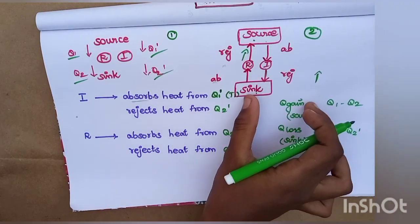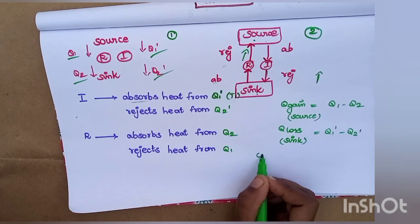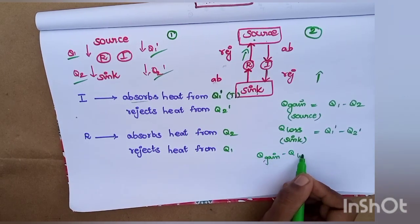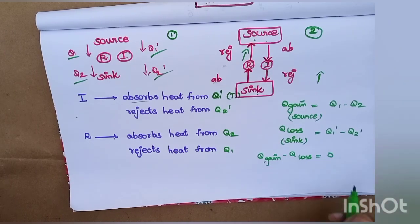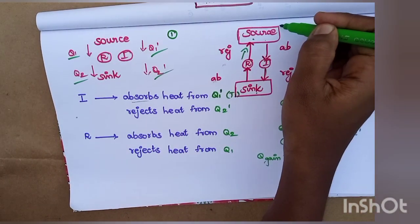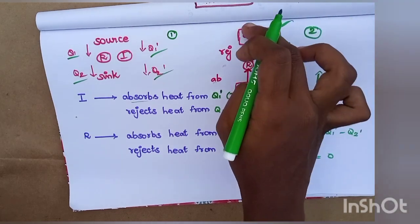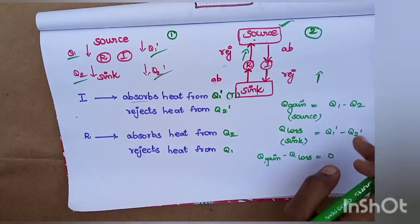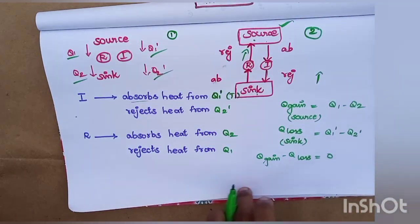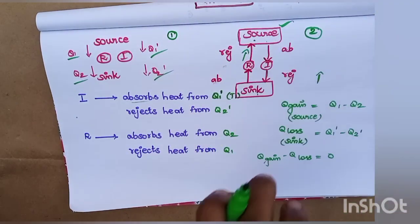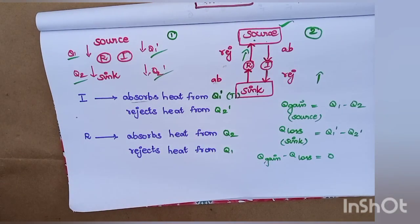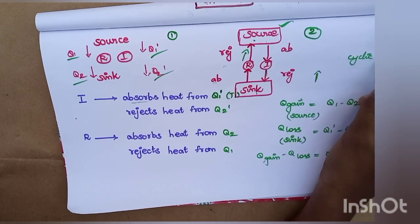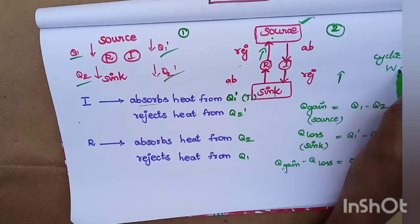Q gain minus Q loss is equal to zero. So what does this mean? This means the first process was started — heat absorb and rejection. Then heat absorb and rejection again. This means reversing the total heat — the source cycle is complete. So for a cyclic process, the total work done is equal to zero.